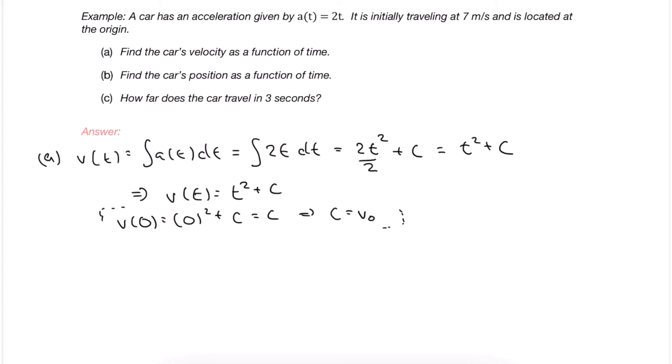Realizing that, we'll use the symbol V0 in place of C to let ourselves know that that's the constant term. And in our case, it's actually given to us at 7 meters per second.